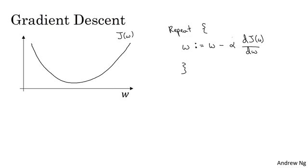So a couple points in the notation. Alpha here is the learning rate and controls how big a step we take on each iteration of gradient descent. We'll talk later about some ways for choosing the learning rate alpha. And second, this quantity here, this is a derivative. This is basically the update or the change you want to make to the parameters w. When we start to write code to implement gradient descent, we're going to use the convention that the variable name in our code, dw, will be used to represent this derivative term. So when you write code, you write something like w := w minus alpha times dw.